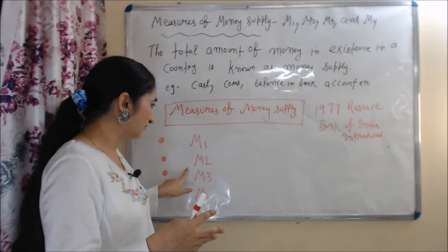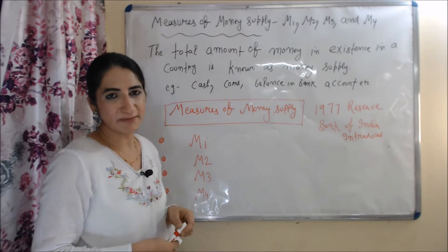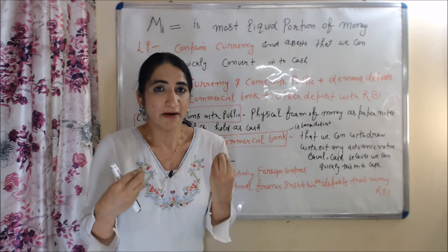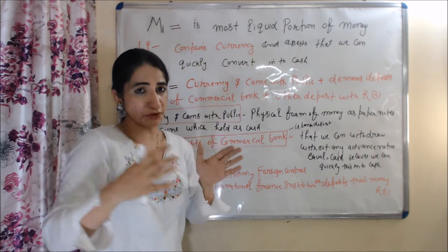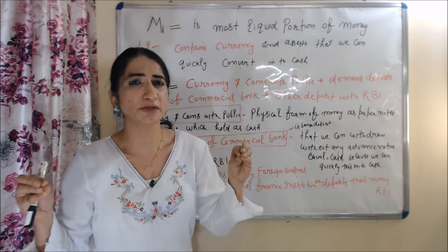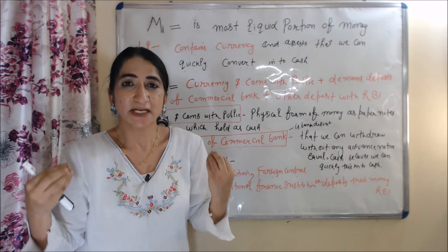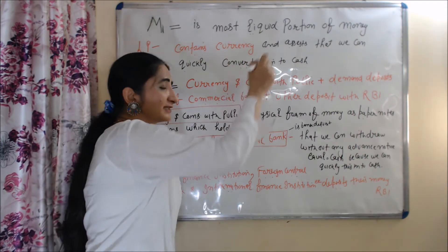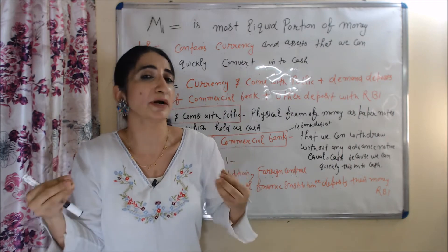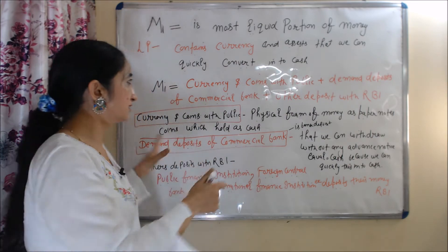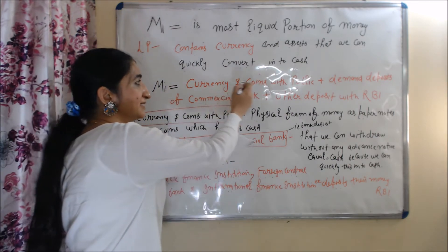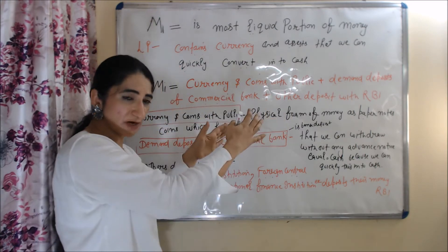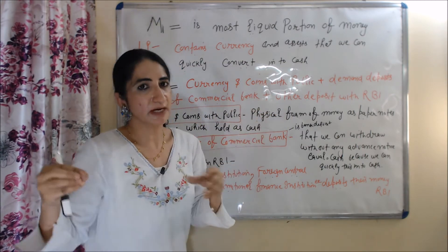M1, M2, M3 and M4 — we will discuss each one by one. Firstly, we talk about M1. M1 is the most liquid portion of money, meaning it contains currency and assets that we can quickly convert into cash. M1 is equal to currency and coins with public, plus demand deposit with commercial bank, plus other deposit with RBI.